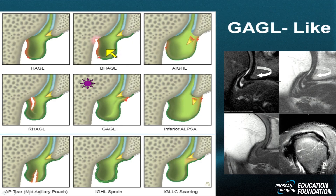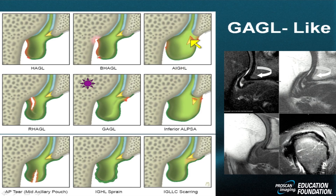Then we have the BHAGL — bony avulsion of the inferior glenohumeral ligament from the humeral neck with a piece of bone, thus the term B for bone. Then the floating IGHL, also known as the IGLE — the anterior inferior glenohumeral ligament injury where both sides are affected: the labrum and the capsule on the glenoid side, and the capsule on the humeral side.